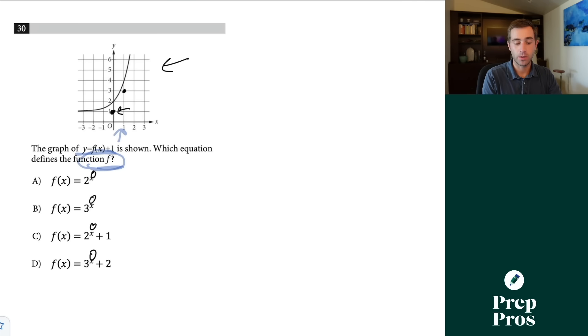2 to the 0 would equal 1, that would work. 3 to the 0 would also equal 1, that would work. But each of C and D would give us values of 2 and 3 when we plug in 0 for x, so we can eliminate those. This is why we picked a second point as well. Our second point is 1, 3. If we plug 1 in for x, we know our correct equation has to equal 3. 2 to the 1st is 2, but 3 to the 1st is 3. Anytime you're dealing with graphs, simply try to plug points in. It gives you the easiest way out.